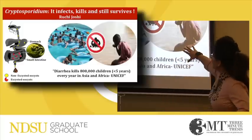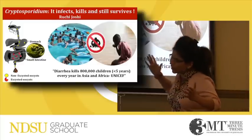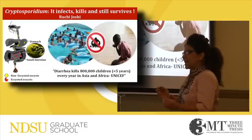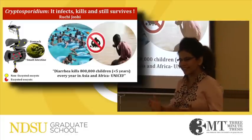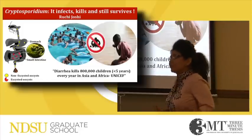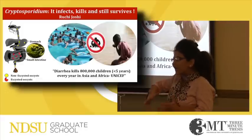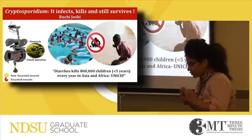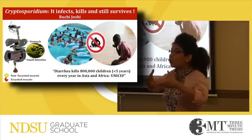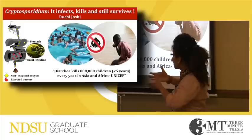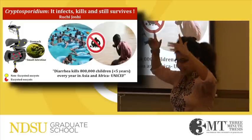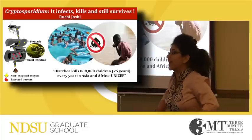Imagine yourself in a swimming pool which unfortunately got contaminated with crypto, and you end up swallowing some of this contaminated water. Once these oocysts get ingested and are inside your body, they travel through your stomach, where they get primed and prepared. Excystation is a process that stimulates each round oocyst to release these four sporozoids, which then get into your small intestine and cause infection.